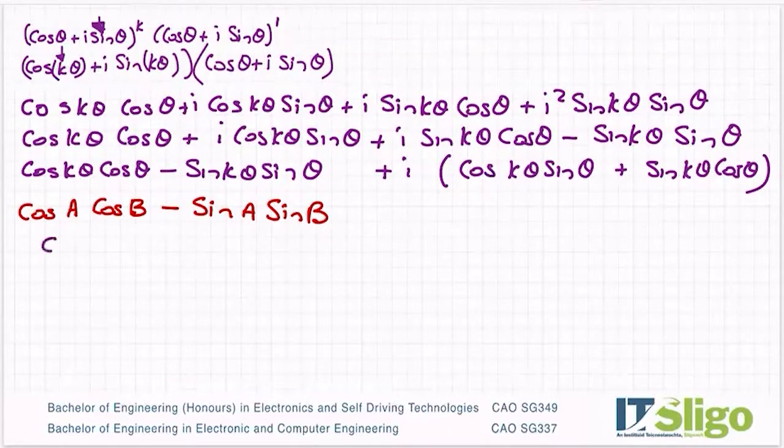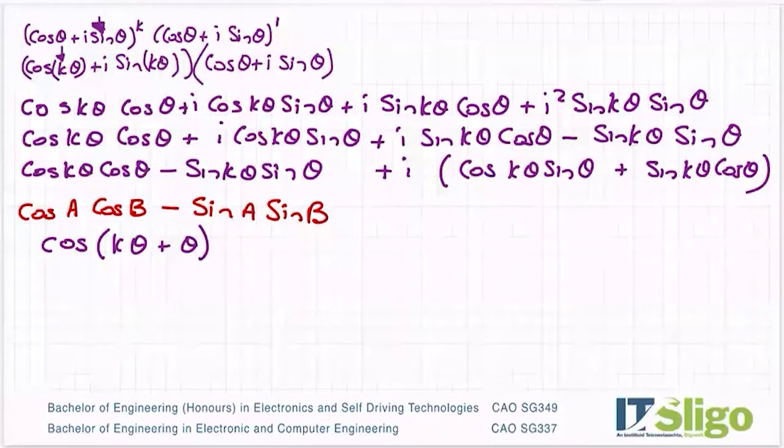So cos A cos B minus sine A sine B. So I can write that as cos of A plus B. So this will be cos of A plus B. And my A is k theta and my B is theta.